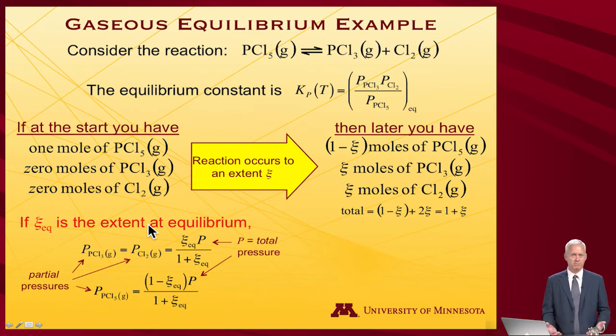Then at that point, the partial pressure of phosphorus trichloride and the partial pressure of chlorine gas will be equal to however much of them is present at equilibrium times the total pressure of the system divided by the total number of moles. So (1 + ξ) is the total amount, and there's ξ of either chlorine or PCl3.